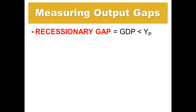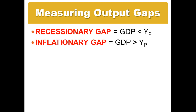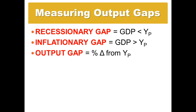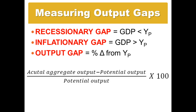We can also measure the size of the recessionary or inflationary gaps. The recessionary gap is where GDP is less than potential output; an inflationary gap is where GDP is greater than potential output, especially when driven by a shift in aggregate demand. To measure the size of the gap, we calculate the percent change from current output to potential output: take the actual output, subtract it from the potential, and divide by potential. It's just regular percent change — new minus old divided by old — where the old output is potential output and the new output is our current output.